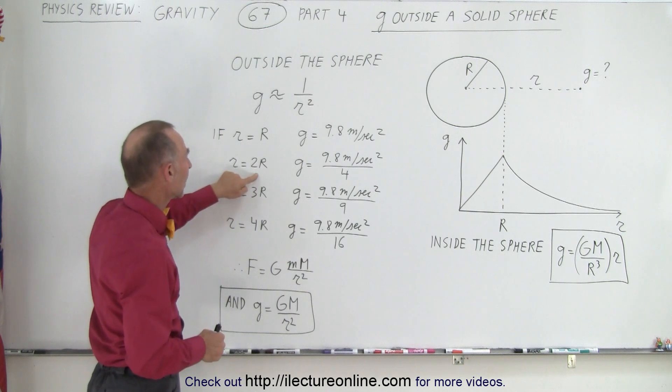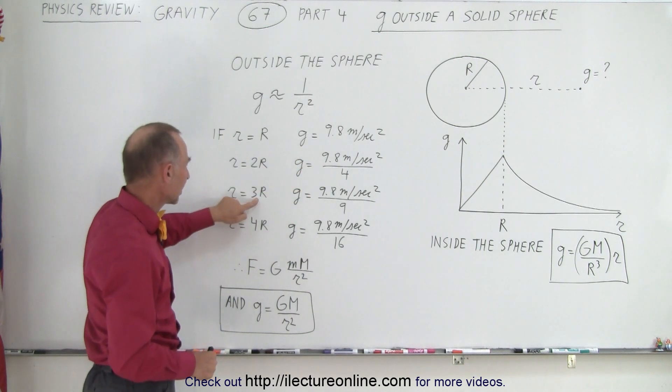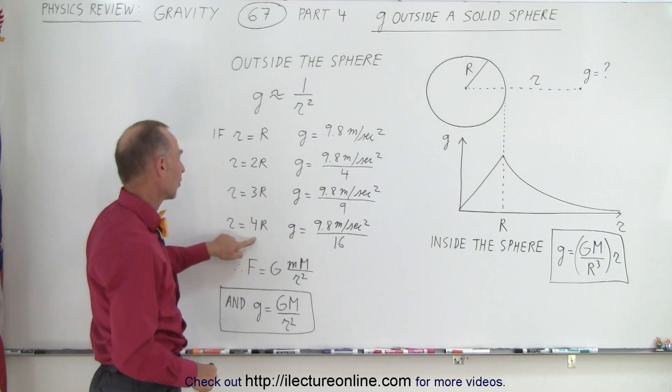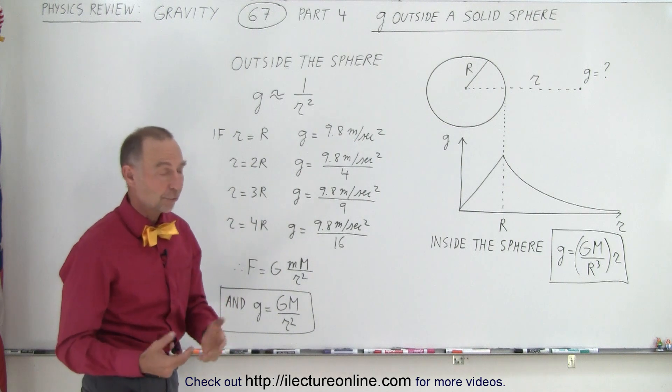But if you're twice as far away, it will be 9.8 divided by 4. Three times as far away, it will be 9.8 divided by 9. And four times as far away, it will be 9.8 divided by 16. And so forth.